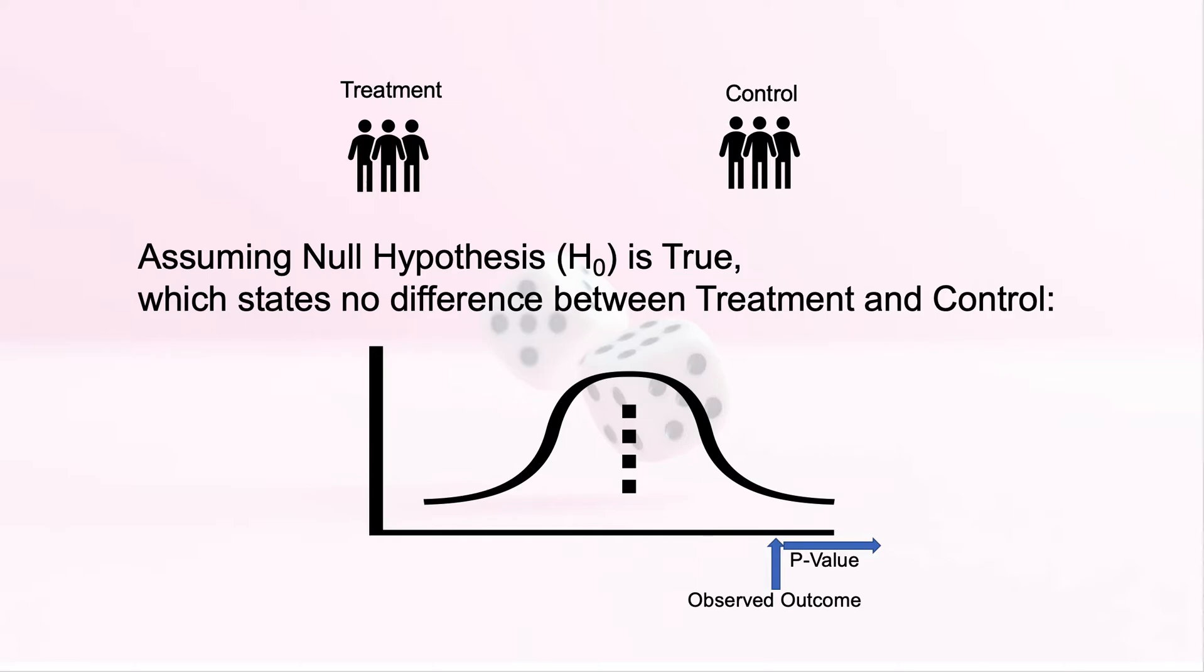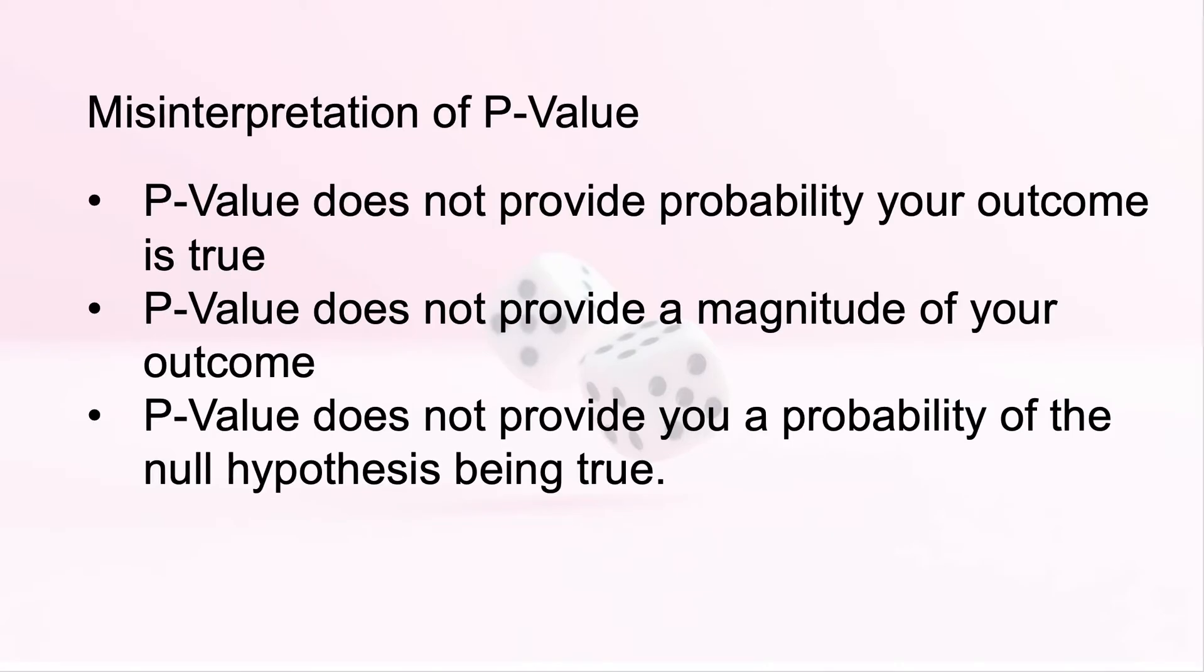A high p-value would indicate a high likelihood that the outcome was due to chance, but a low p-value would indicate a low likelihood that the outcome was just due to chance. Statistical significance is based on a cutoff used for the p-value. It is important to note that the p-value does not provide the probability your outcome is true, does not provide a magnitude of your outcome, and does not even provide you a probability of the null hypothesis being true.